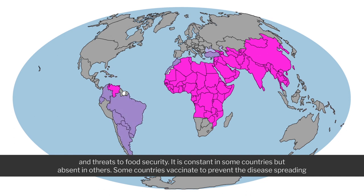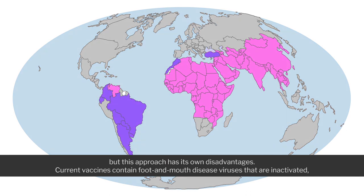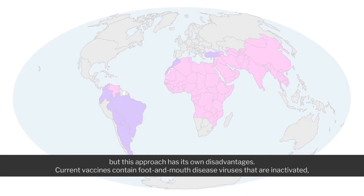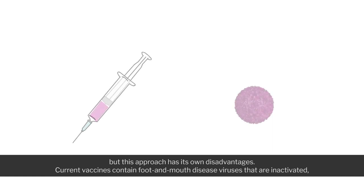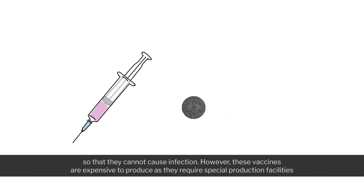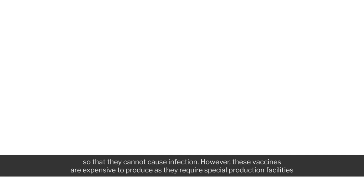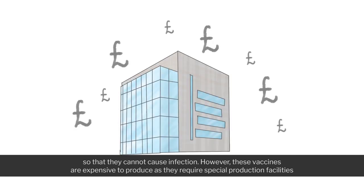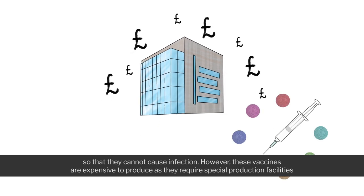Some countries vaccinate to prevent the disease spreading, but this approach has its own disadvantages. Current vaccines contain foot and mouth disease viruses that are inactivated so they cannot cause infection. However, these vaccines are expensive to produce as they require special production facilities.